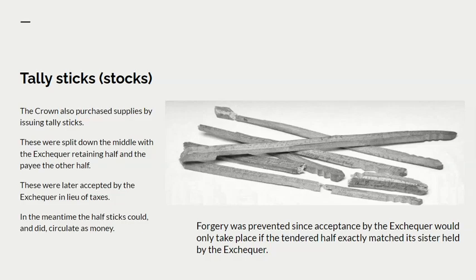When I say stocks I'm talking about the tally sticks. The crown typically purchased many supplies by issuing tally sticks which have numbers written on them and are then split down the middle. The Exchequer retains half; the merchant who supplied, say, gunpowder to the king gets the other half. The merchant can exchange these on the market for other goods because the Exchequer will accept half a stock in lieu of settlement of tax debts, and these half sticks could and did circulate as money. Forgery was prevented since acceptance by the Exchequer would only take place if the half stick exactly matched its sister held in the Exchequer — the splitting of the wood provided an anti-forgery device.